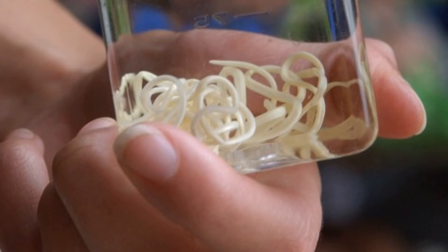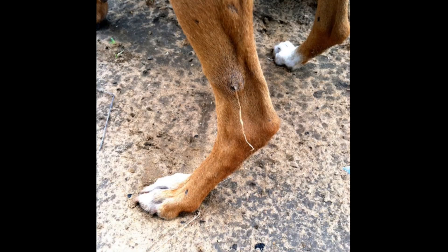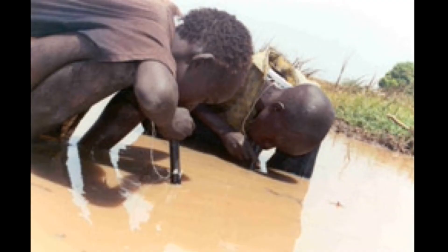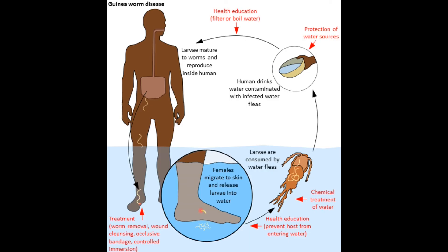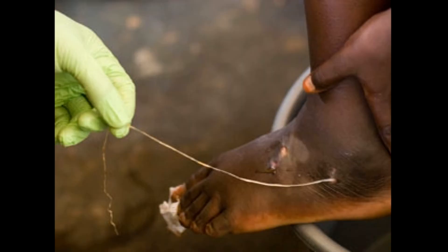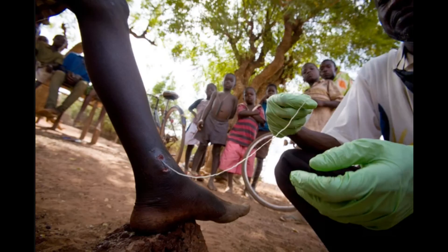4. Dracunculus medinensis — a kind of parasite classified as helminth nematodes, also known as a type of roundworm. These parasites can lead to guinea worm disease, or dracunculiasis. When people swallow these parasites found in drinking water, larvae move from the intestines to the skin, where they cause sores. Treatment is required before worms can be removed from the skin, and this can take up to two years to fully resolve.